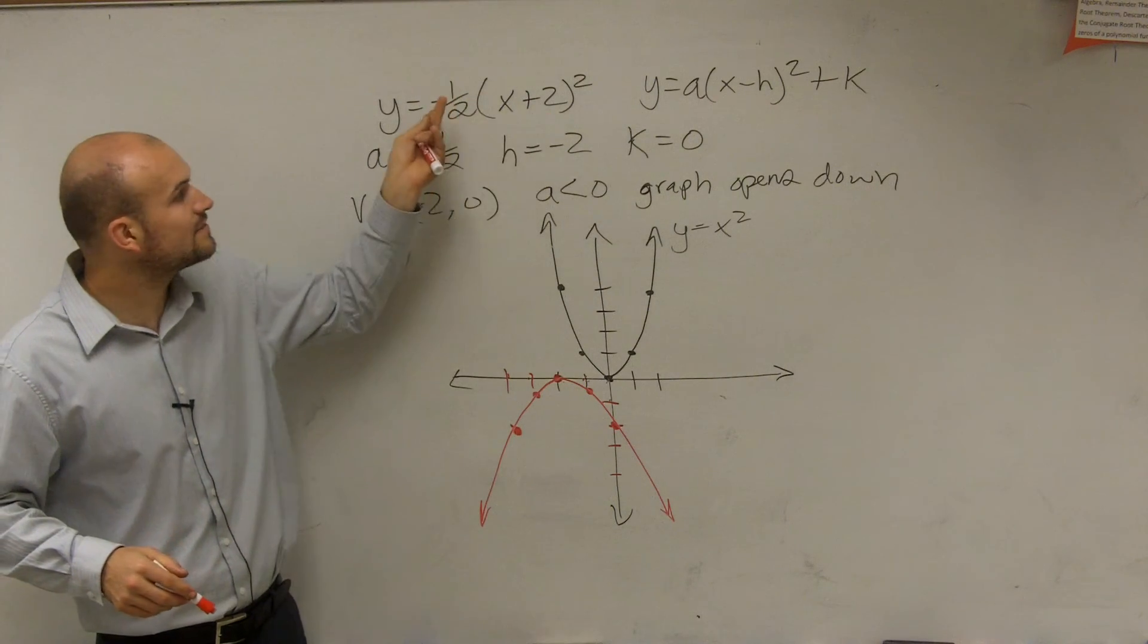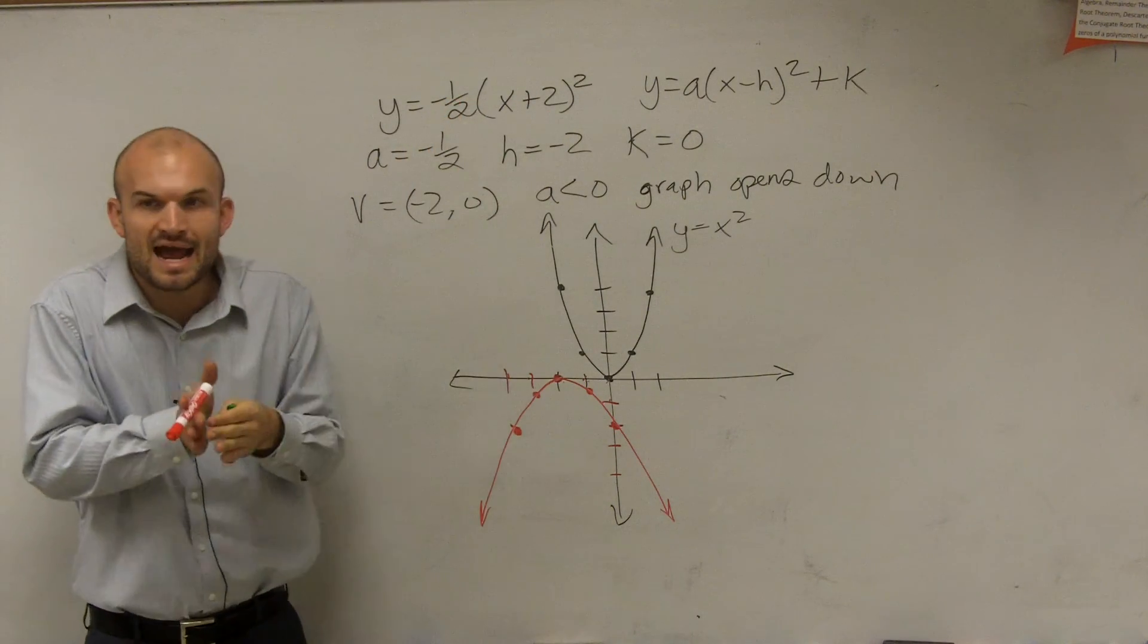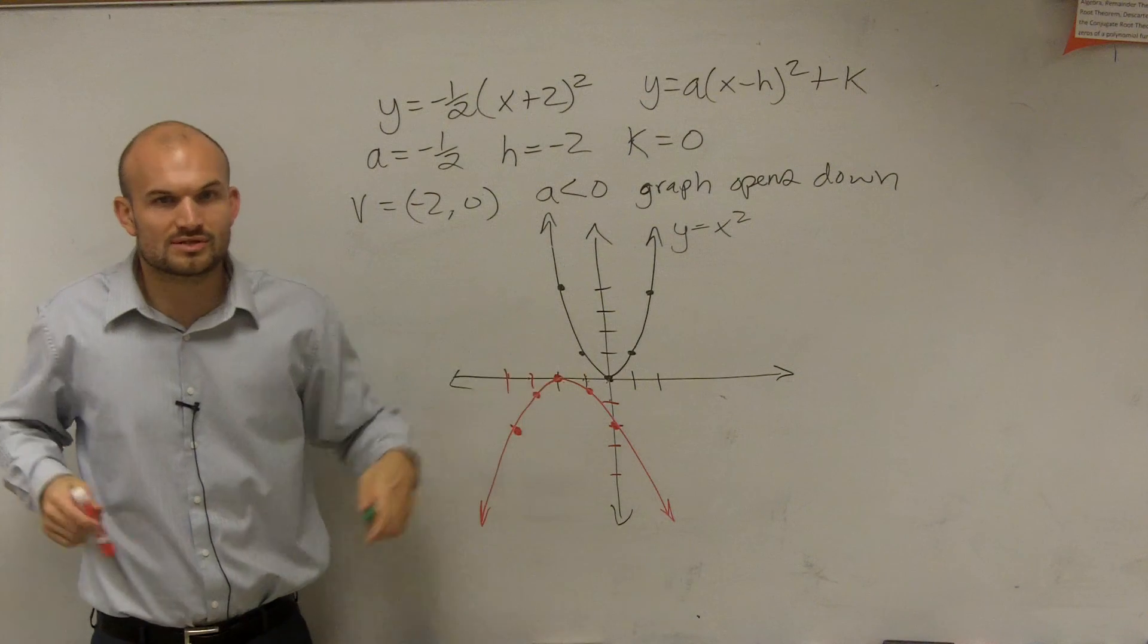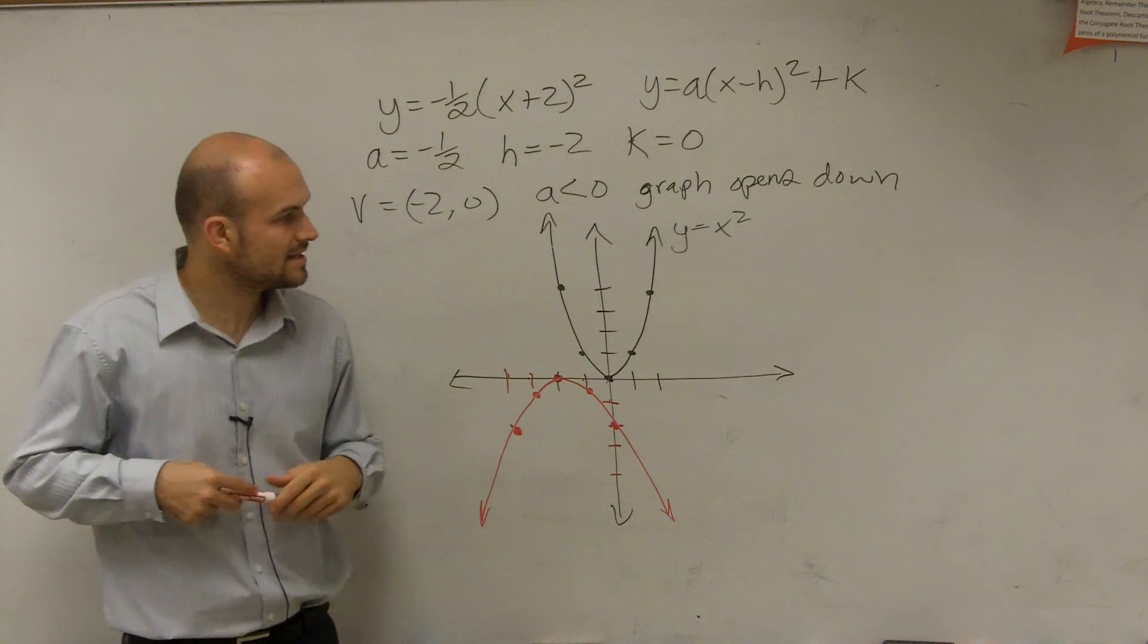So you could say it's shifted 2 to the left, it's reflected, and then 1 half stretched it horizontally. And that's it. That's all you guys have to do.